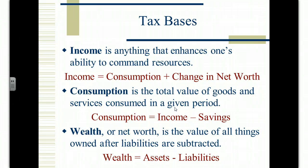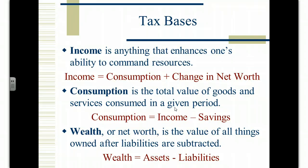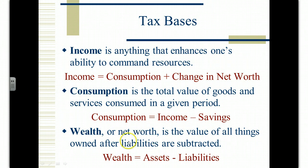Consumption is the total value of goods and services you consume — it's simply income minus savings. Income is how much money you have available to spend; savings is how much of it you don't spend. Wealth is assets minus liabilities — what assets do you own versus what liabilities do you have? Wealth can be positive or negative depending on which is greater. If assets are greater, you have a positive net worth; if liabilities are greater, you have a negative net worth.